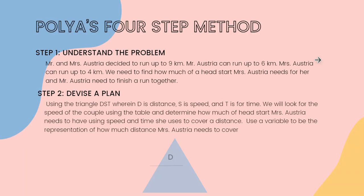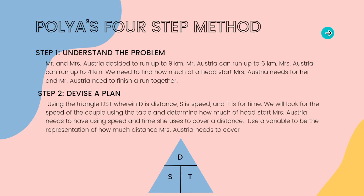The first step includes understanding the problem. As we laid out earlier, Mr. and Mrs. Austria decided to run a total of nine kilometers together and would want to finish at the same time, which is quite difficult seeing as they run at different speeds, which is why we need to find out how much head start Mrs. Austria needs for them to finish at the same time.